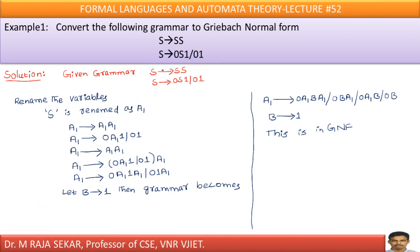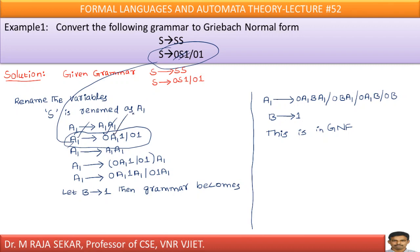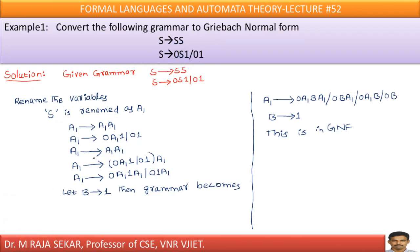What about the next production? S → 0 S 1. With S renamed, A1 → 0 A1 1. Now consider A1 → A1 A1. In the place of the first A1 on the right-hand side, I substitute 0 A1 1 or 0 1. So A1 → A1 A1 becomes: 0 A1 1 A1 and 0 1 A1.